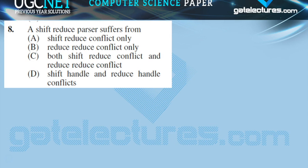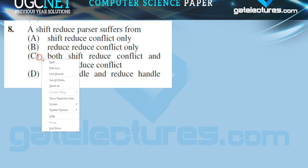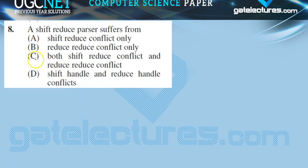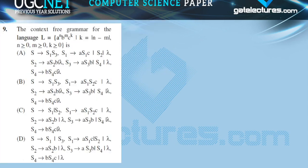The next question: a shift-reduce parser suffers from which conflicts? A shift-reduce parser suffers from both shift-reduce conflict and reduce-reduce conflict. The answer is C.